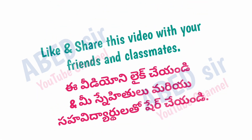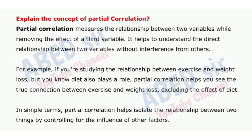Next important short question: Explain the concept of partial correlation. Partial correlation measures the relationship between two variables by removing the effect of a third variable. It helps to understand the direct relationship between two variables without interference from others. For example, if you are studying the relationship between exercise and weight loss but you know diet also plays a role, partial correlation helps you see the true connection between exercise and weight loss, excluding the effect of diet. In simple terms, partial correlation helps isolate the relationship between two things by controlling for the influence of other factors.